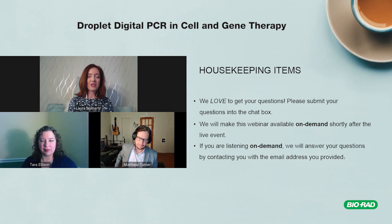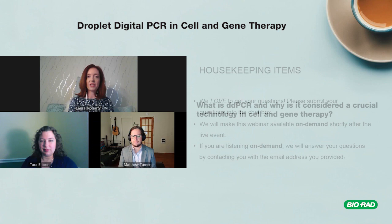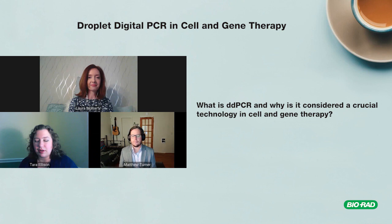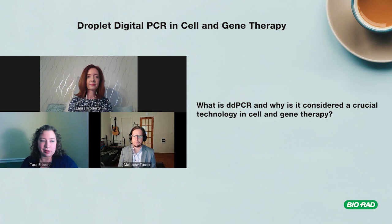My first question: what is ddPCR and why is it considered such a crucial technology in cell and gene therapies? ddPCR — droplet digital PCR — is a method for quantifying nucleic acids. I like to think of it as basically a molecule counter: it counts how many molecules of your particular target sequence of DNA or RNA you have in your sample.